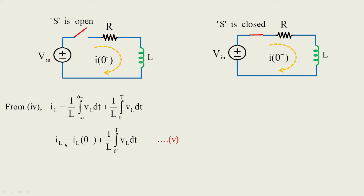The general equation is: iL = iL(0−) + (1/L) ∫ from 0− to t of vL dt. This general equation is very important for deriving the transient current through the inductor. Remember this formula — we are going to use it often to obtain the current through the inductor or the transient current of the circuit.